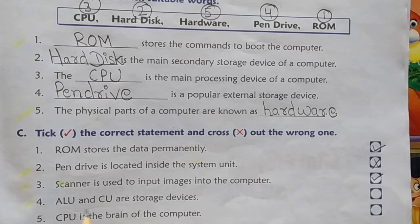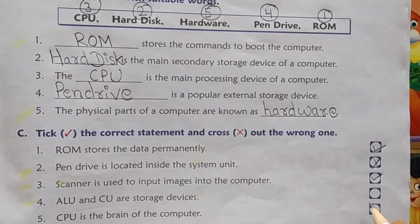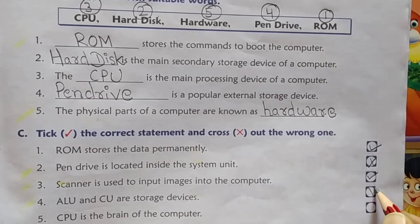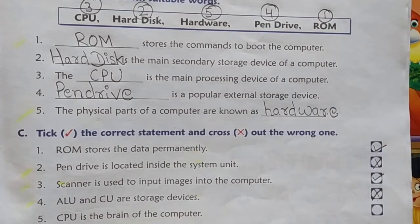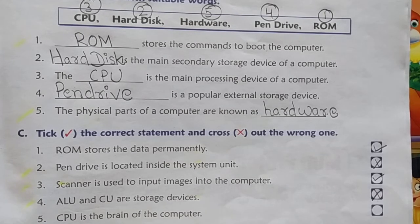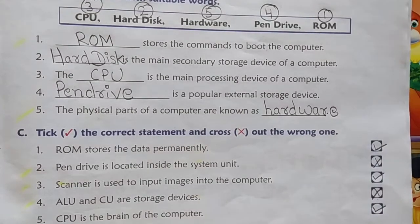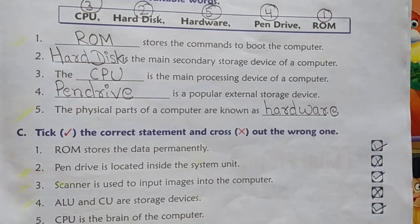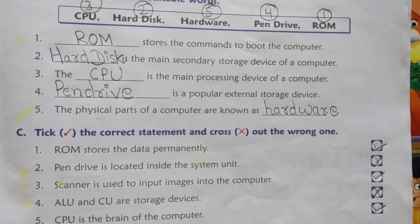Fourth statement: ALU and CU are storage devices. No — ALU and CU are components of the CPU, not storage devices. This is wrong — you will cross it. Fifth statement: CPU is the brain of the computer. Yes, this is correct — you will tick here. So you will learn this and write it down in your book. That's all for today. Thank you.